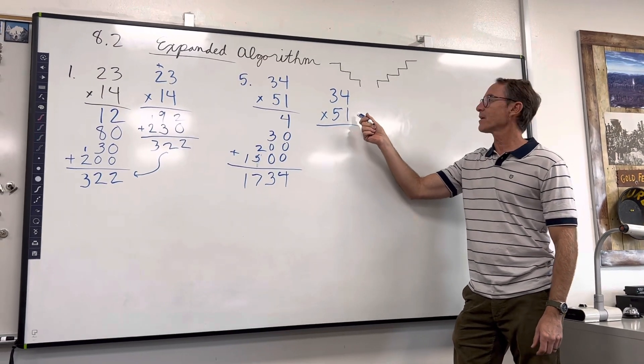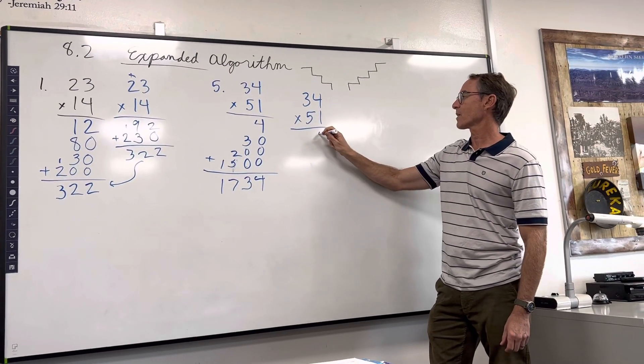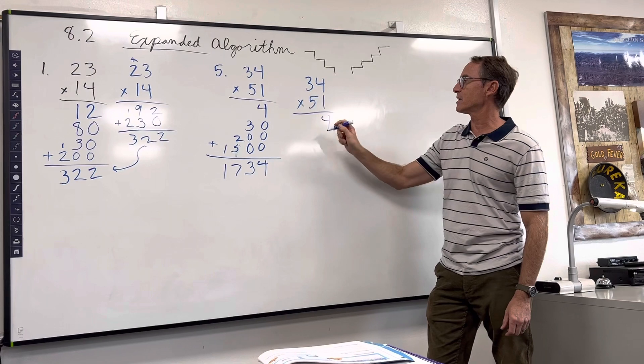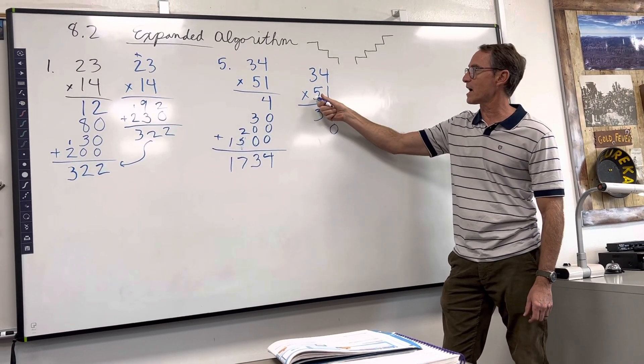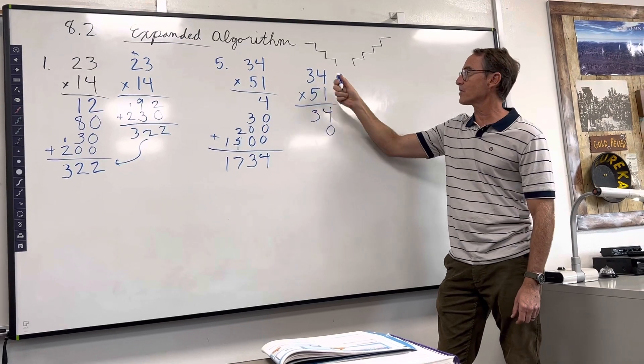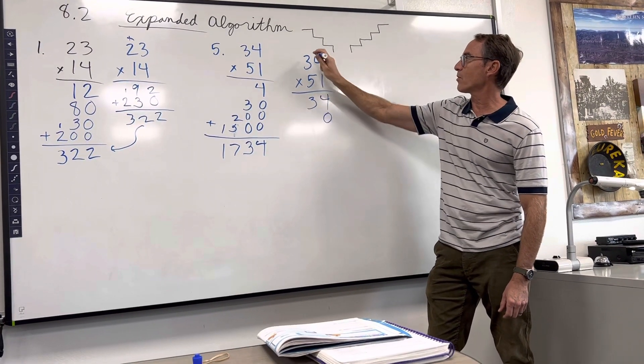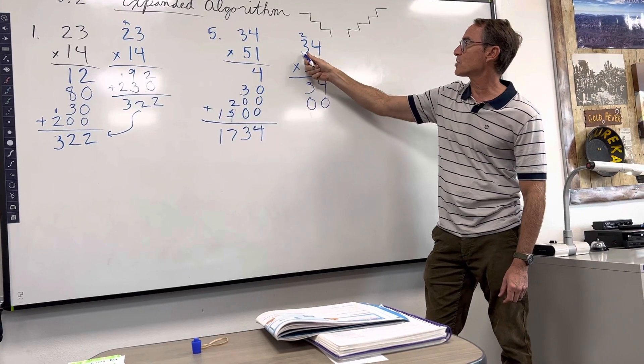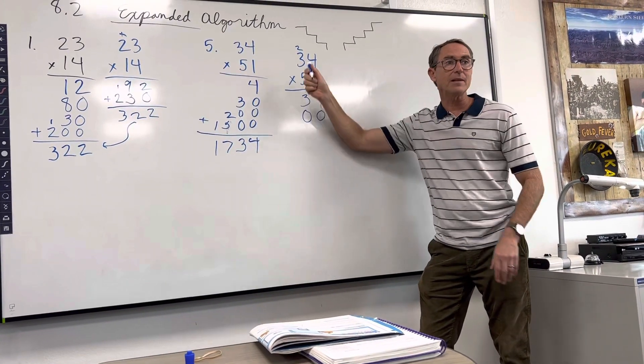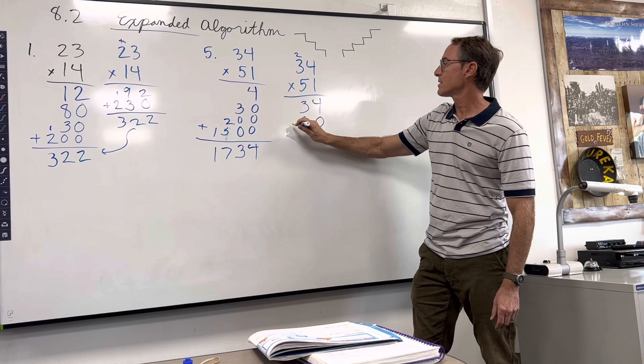Let's go back to standard. Everybody ready? 1 times 4 is 4. 1 times 3 is 3. Put our zero down here because now we're in the tens. 5 times 4 is 20. Now remember this time we carry the 2, put the zero on here. 5 times 3 is 15 plus the 2 is 17.